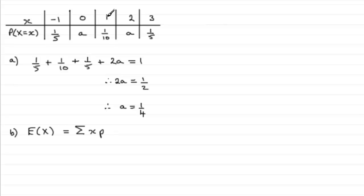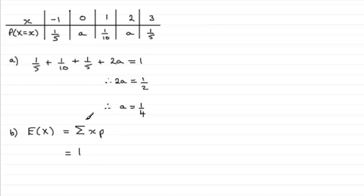But why is it obvious? It's because the distribution is symmetrical. You've got exactly the same value on both ends — the fifth and the fifth — and then as you come in from the ends, you've got A and A, with a central value of 1/10. So the distribution is symmetrical, and the answer is just E(X) equals 1.